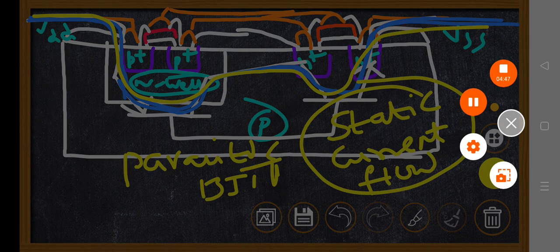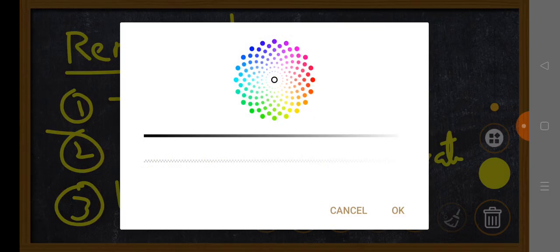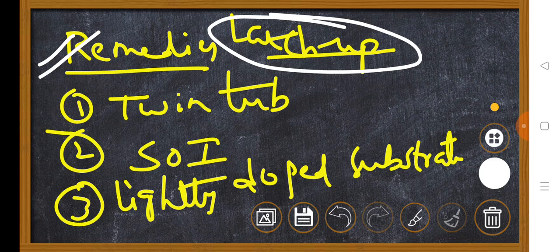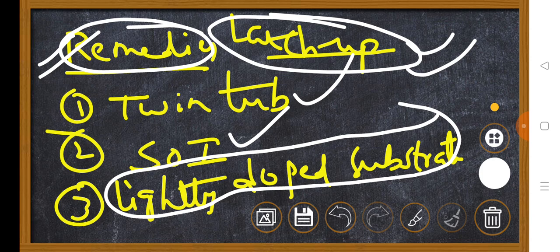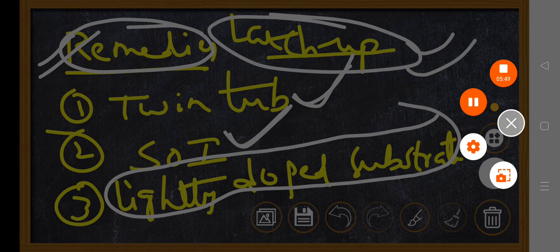How is latch-up going to be overcome? The remedies of latch-up: instead of well fabrication you can use Twin-tub fabrication or SOI fabrication process, or you can lightly dope your substrate to overcome latch-up. This is a very important question from your exam point of view. The definition: in well fabrication, due to parasitic bipolar junction transistors, there is a path from VDD to VSS which leads to static current flow — this effect is known as latch-up. Now we will see the Twin-tub fabrication and SOI technologies.